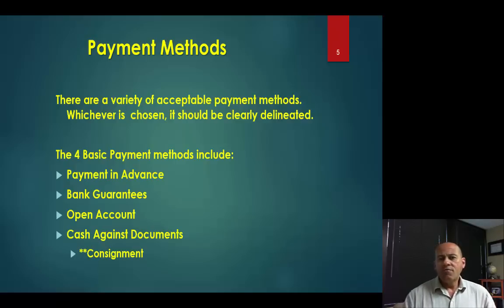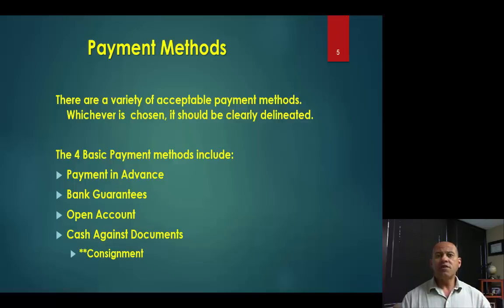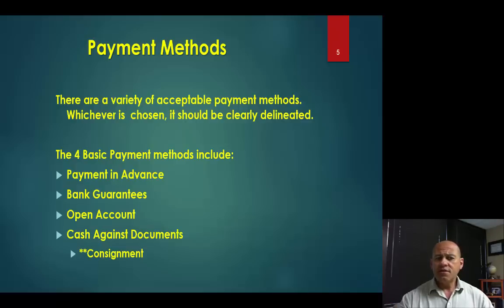Finally, consignments. Consignments are not quite in the same category as the four basic payment methods because often there hasn't been a negotiation about timing — unlike open account 30, 60, or 90 days. Consignments are open arrangements where the seller delivers product to the buyer, and the buyer doesn't have to pay until they sell to their own customer. It's important to understand that under these different payment methods, there are different ways that buyers and sellers mitigate, control, and manage their risk.